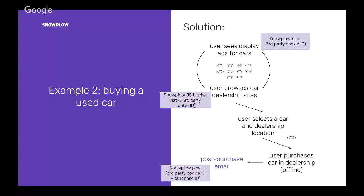Going back to that user journey, what we did is we implemented a Snowplow Pixel with a third-party cookie ID in all the display ads, we have the Snowplow JavaScript tracker on the website, and then after purchase we send a post-purchase email with information about financing and insurance, which again contains a Snowplow Pixel and also sends through the purchase ID of that user. Therefore you suddenly have one ID that goes through everything and you can connect the users across different sites. Of course, third-party cookies aren't always reliable, but going from not being able to connect any purchases to being able to connect quite a few was quite a good step forward.